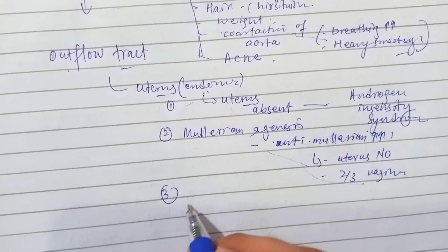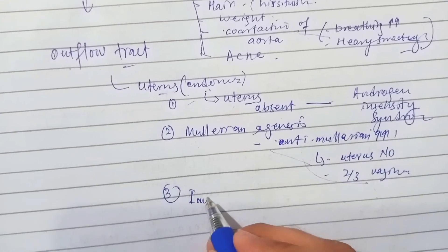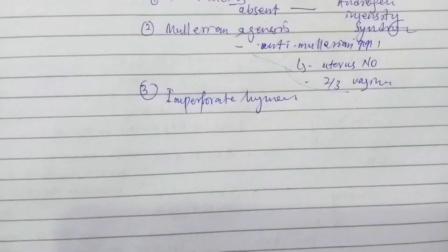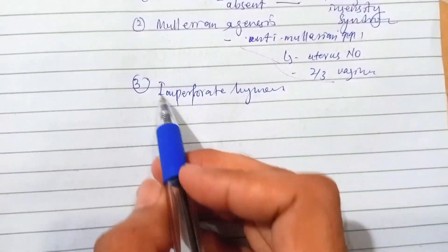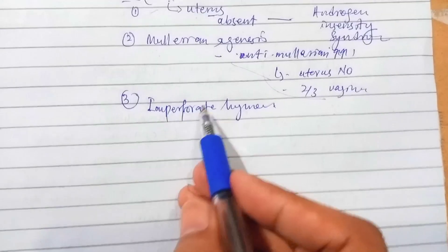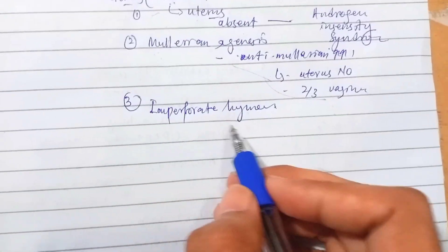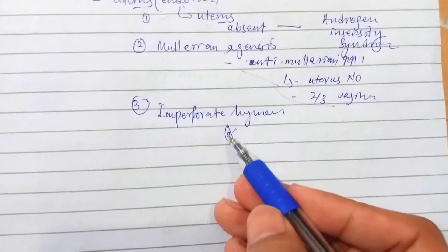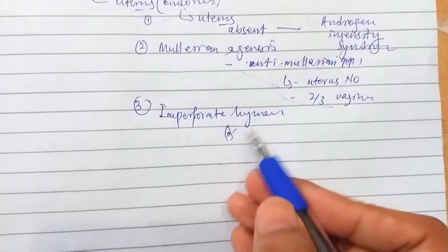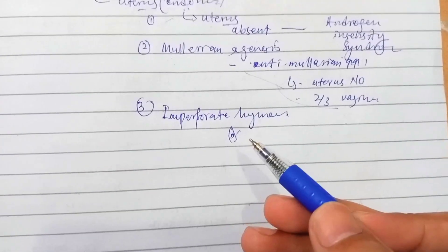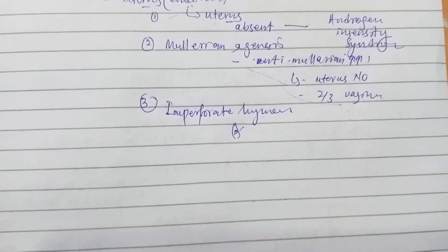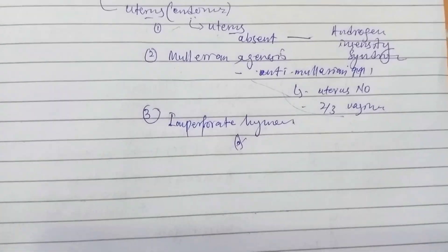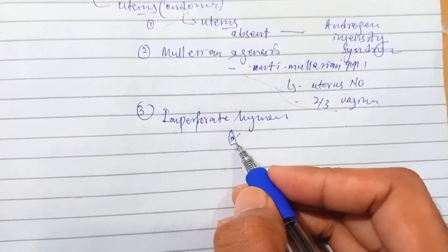Fallopian tube and the upper two-thirds of the vagina are affected, so there is no menstruation. Number three is imperforate hymen. We know that there is a hymen present in the female genital tract. A small hole is present from which bleeding in case of menstruation comes out. But if there is imperforate hymen and bleeding occurs from the uterus, from the endometrial wall dissolution, but due to imperforate hymen the bleeding does not occur.